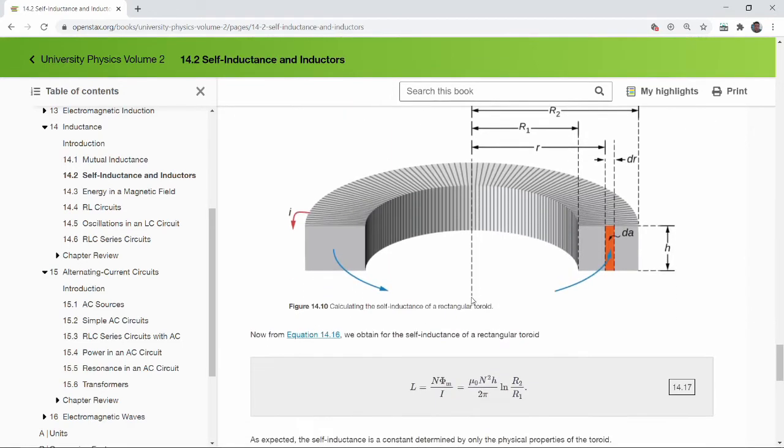do watch the lecture video. I take like 30 minutes re-deriving the magnetic field of a toroid and using that to calculate the magnetic flux and then using that to calculate the inductance.